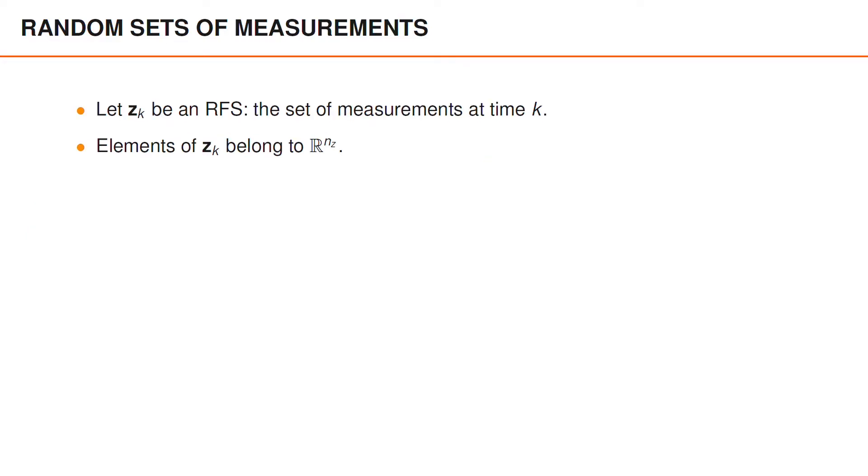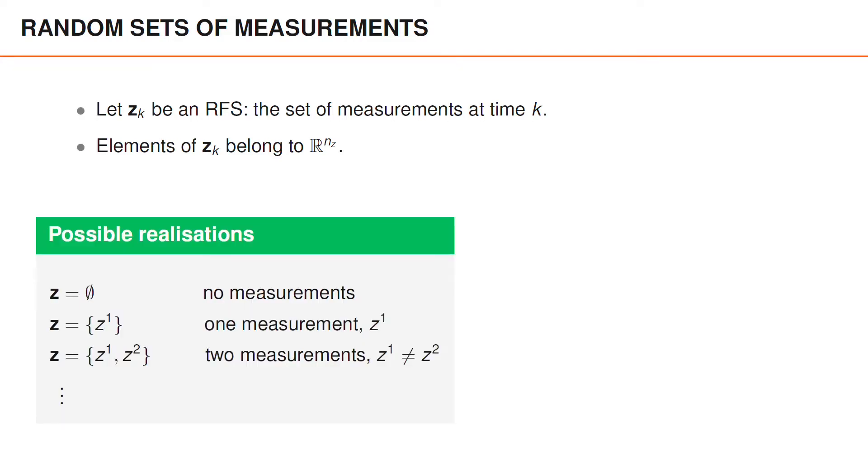We also model the measurements as random finite sets. And we use boldface z with subindex k to denote the set of measurements at time k. In this case, the elements of zk are normally vectors of length nz.